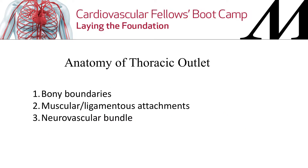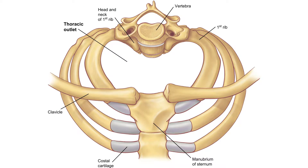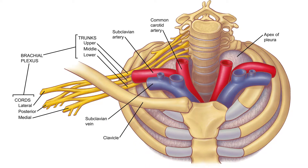Anatomy is all about relationships. You need to know the relationships between one structure and the other structures. Bony boundaries are important with regard to muscular and ligamentous attachments and how the neurovascular bundle relates to those structures — that's how you can develop thoracic outlet syndrome. Looking from the top down, the thoracic outlet is formed posteriorly by the vertebra, laterally by the first rib, and anteriorly by the sternum.